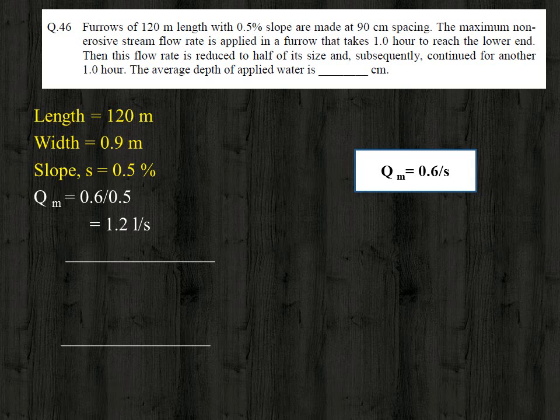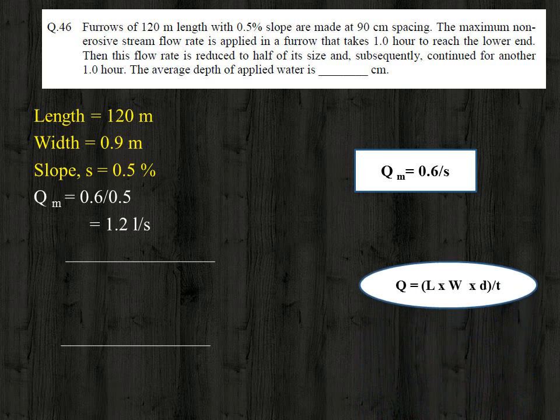To find the depth, we use the equation Q = L × W × d / t, which can be verified by units: left side is m³/s and right side is m × m × m / s = m³/s. Rearranging, depth d = Q × t / (L × W).